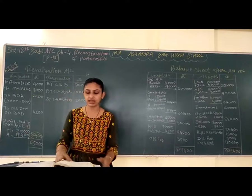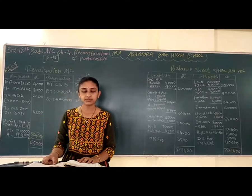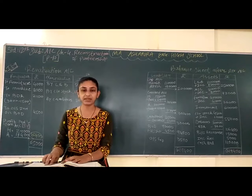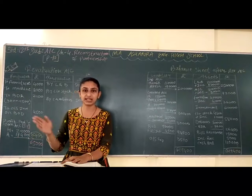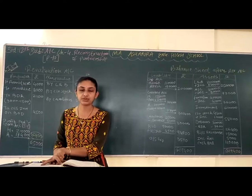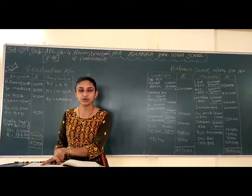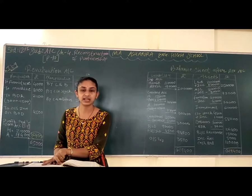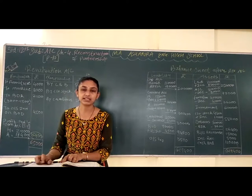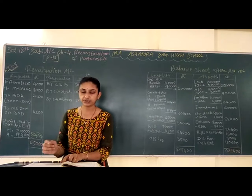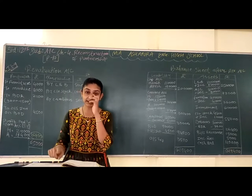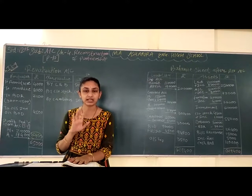Yahan pe aap confuse mat hona. Yahan pe do ratios diye hain aapko — old sharing ratio and new. New means they have to change the ratio. Lekin revaluation mein humein kaun se ratio mein profit ko distribute karna hai? Old ratio mein. Yahan pe agar do ratios aapko diye gaye ho — old and new — always consider old profit and loss sharing ratio. Agar new ratio se aap distribute karoge, to aapka yah sum wrong ho jayega. Which ratio you should consider — 5:3, it means old ratio. Usi ratio mein hi profit ko distribute karna hai.